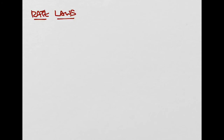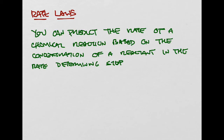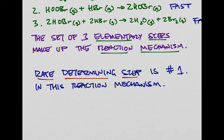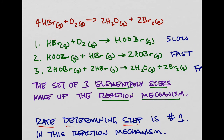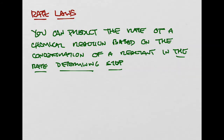Now let's move on to rate laws. With rate laws, we take into account that concentration. You can predict the rate of a chemical reaction based on the concentration of a reactant in the rate-determining step. As long as you keep all concentrations the same except for one, this becomes a fairly easy task. We can represent this in a mathematical form.